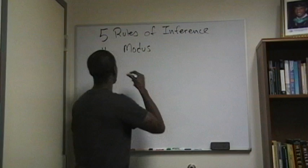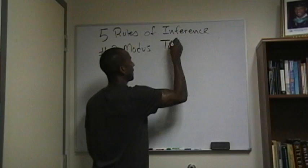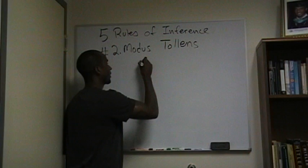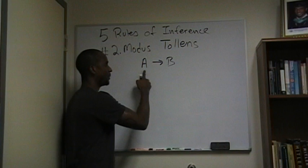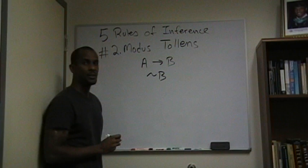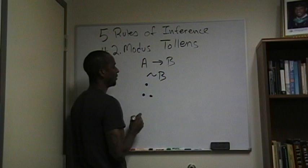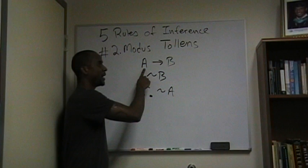Number two is also known as modus ponens. It says: if A happens, then B will happen. However, B has not happened. Therefore, A will not happen.